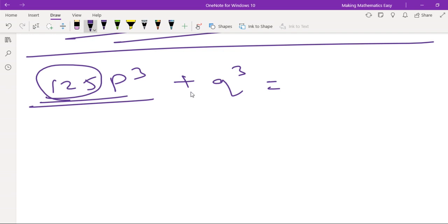which is 5. So this is 5P the whole cube plus Q cube. So this will be (5P)³ + Q³.